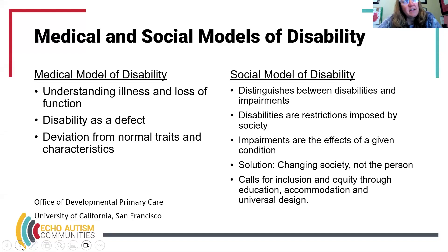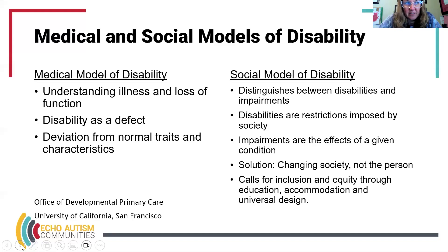On the other side is the social model of disability, and this makes a really important distinction between disabilities and impairments. Disabilities are restrictions imposed by society on an individual, while impairments are the physical effects themselves.